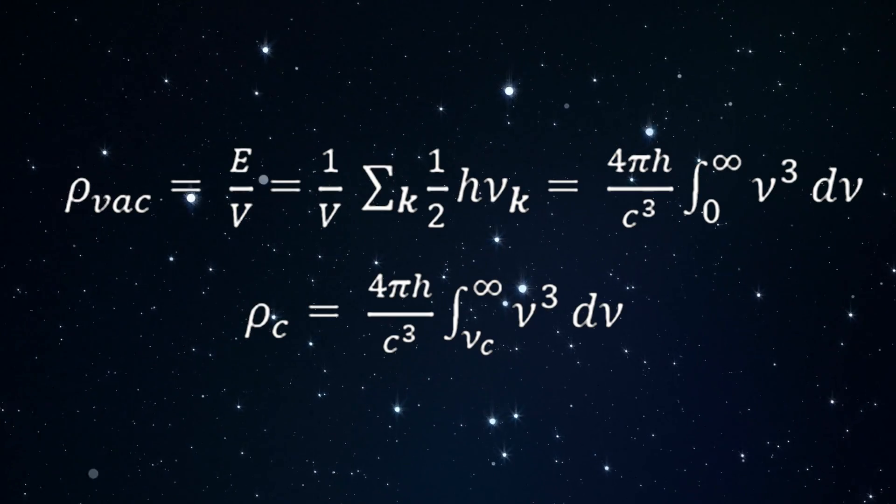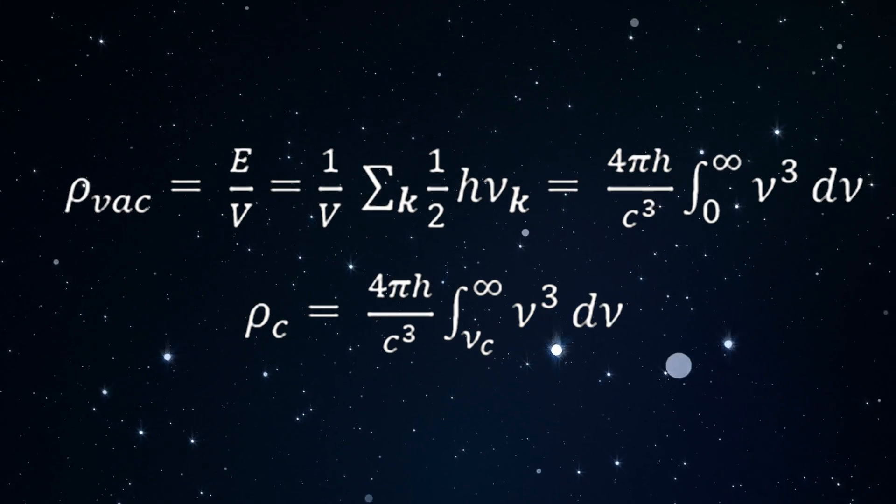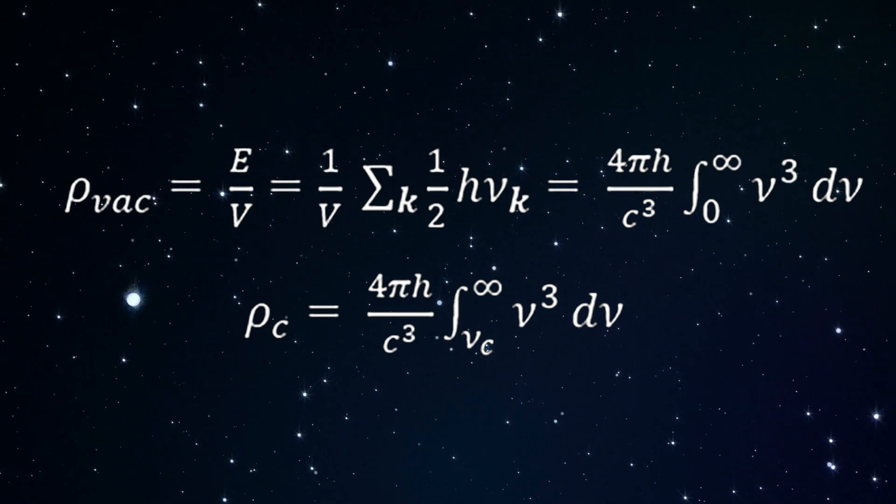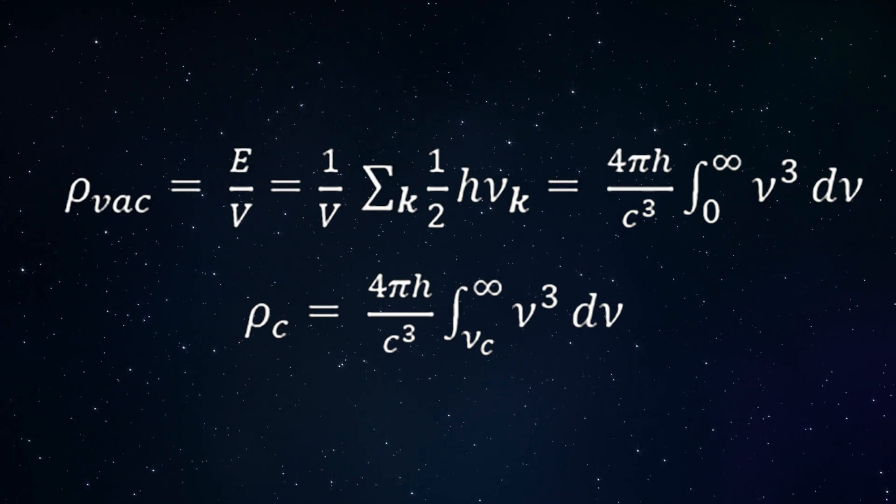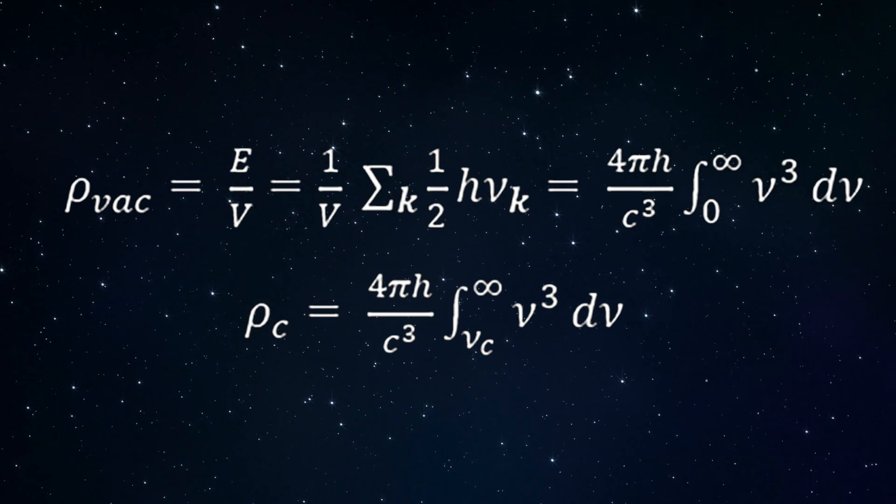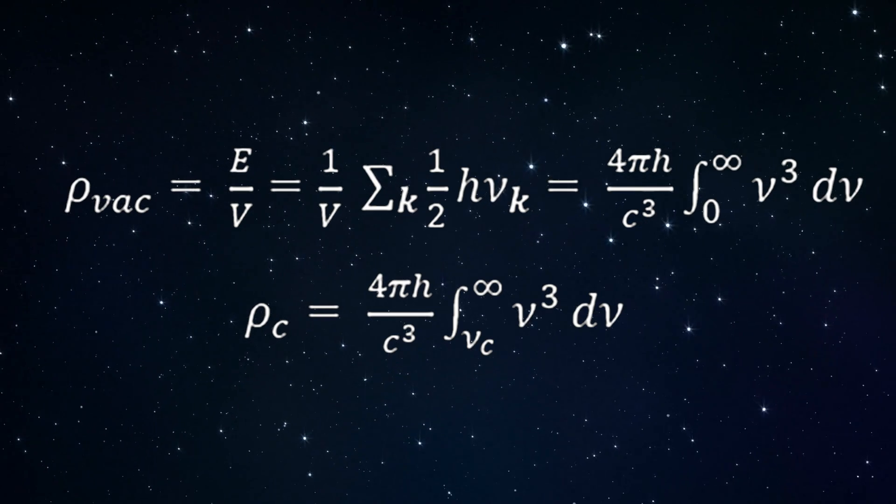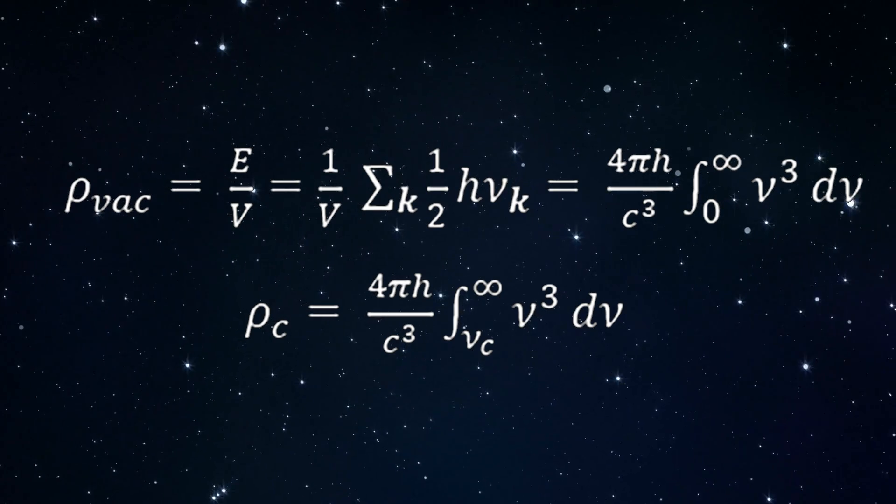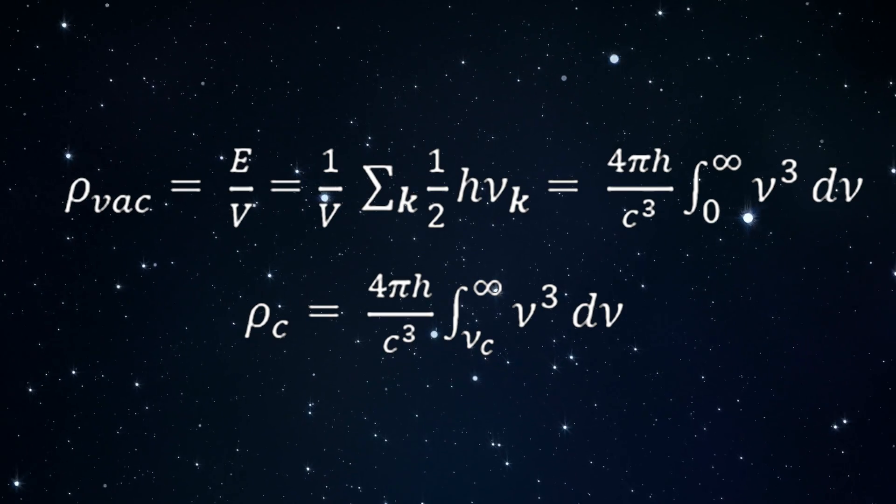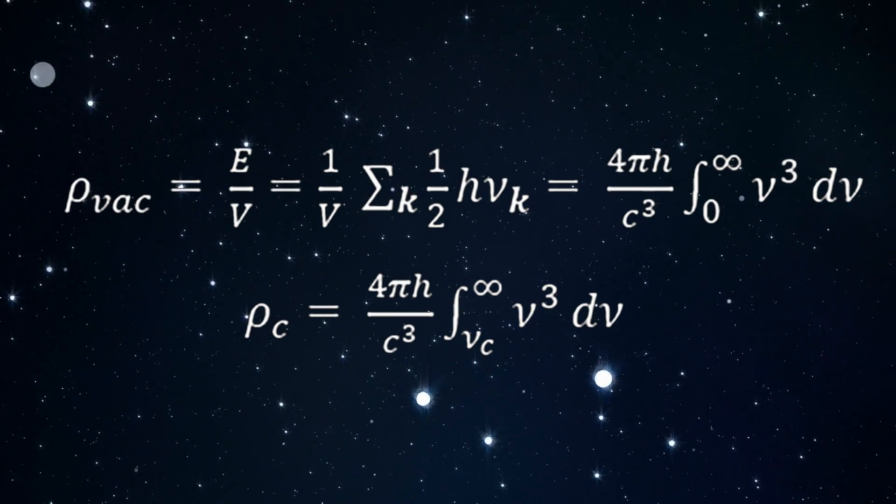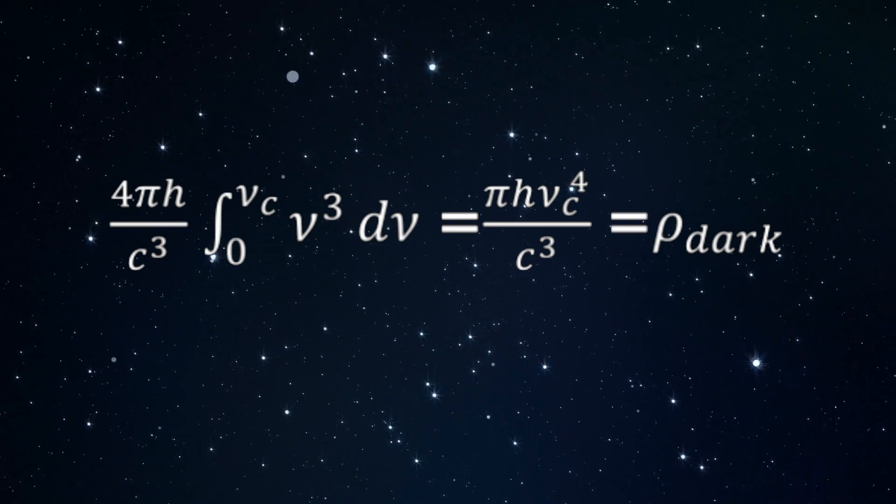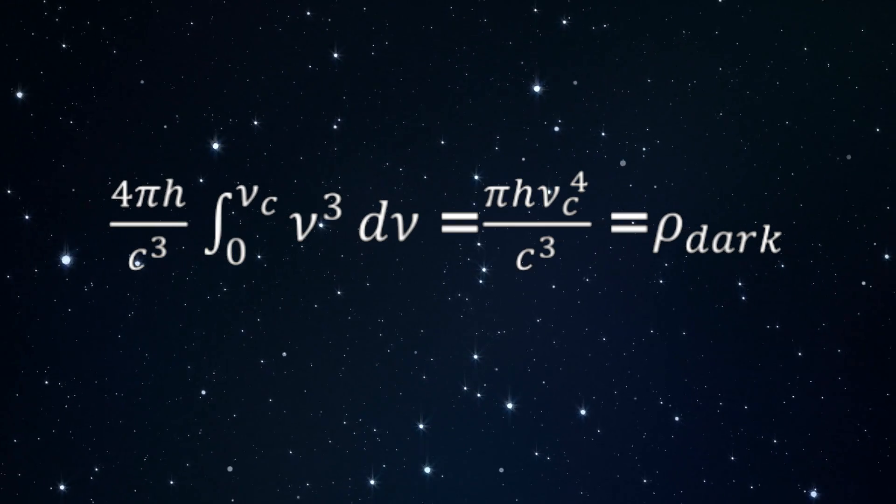If instead we subtract the energy density rho sub c of virtual photons of zero-point vacuum fluctuations captured by ejected water nanoclusters through the microscopic dynamical Casimir effect, the divergent integral is largely cancelled. Nu sub c is the cutoff vibrational frequency of the ejected water nanoclusters. This leaves the finite quantity shown to be identified with the dark energy density.